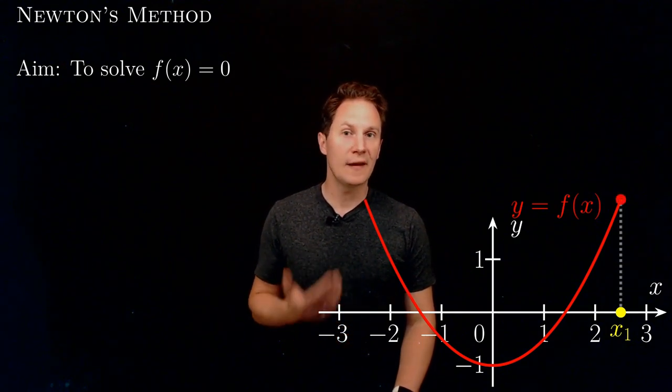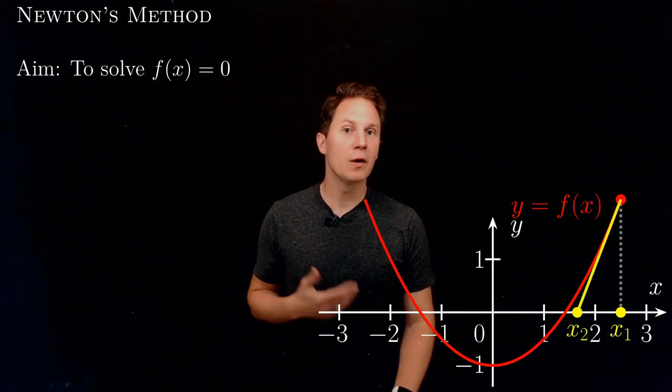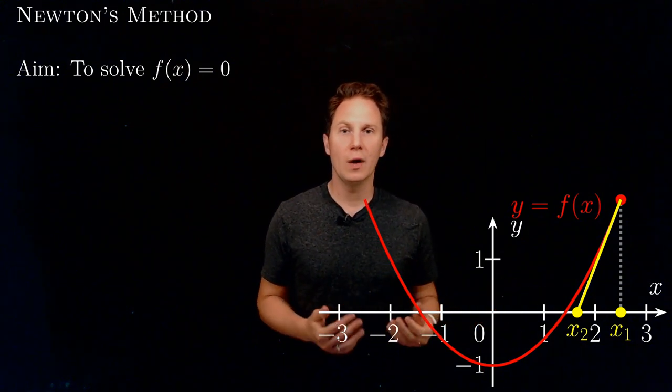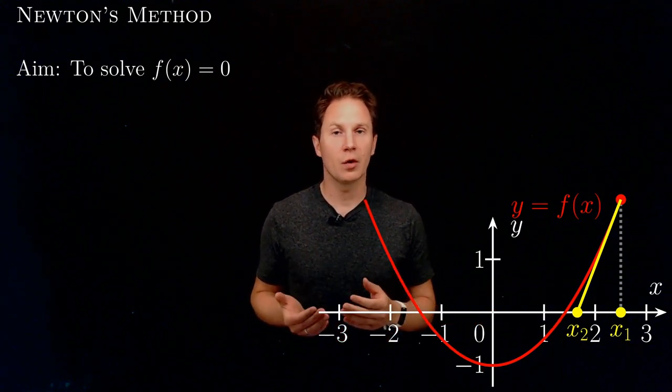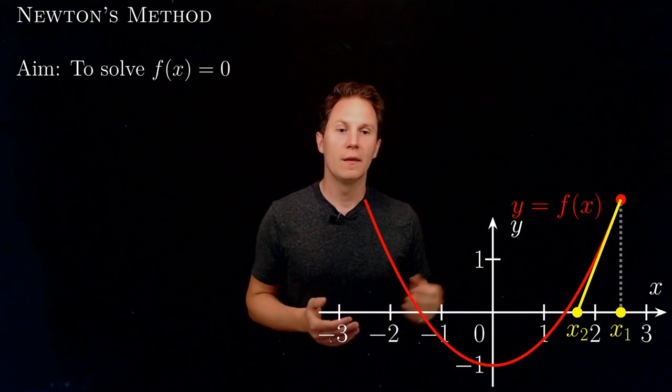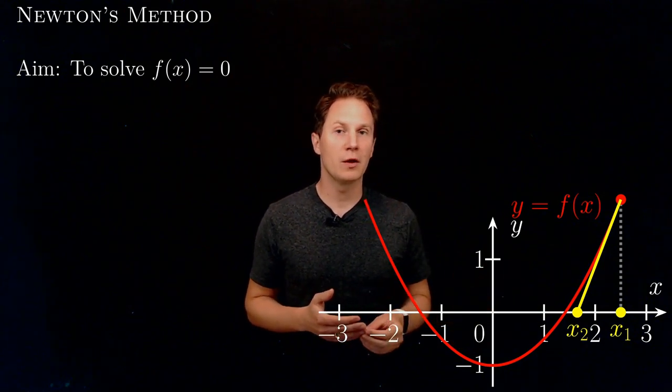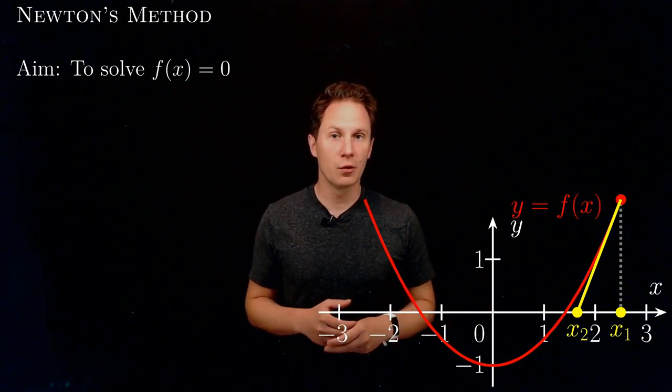We draw the tangent line to the graph at that point and see where it crosses the x-axis. That would be the point x₂, and this would be our next approximation to the solution. Then we could iterate this process and this way get better and better approximations to the solution.